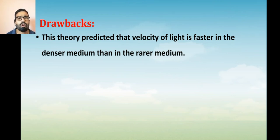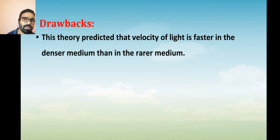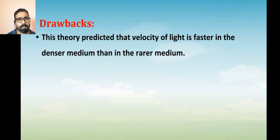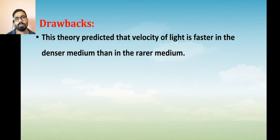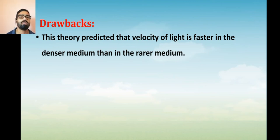Still, there were some drawbacks in this model. Although the theory was given by Descartes and continued by Newton — who also said light travels in the form of particles — during the same time, other scientists working on the concept of light found different results from their experiments. Because of this, the corpuscular theory failed. We can clearly understand these drawbacks when we go to the next theory of light.